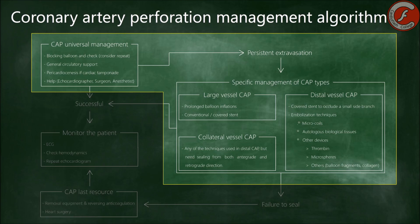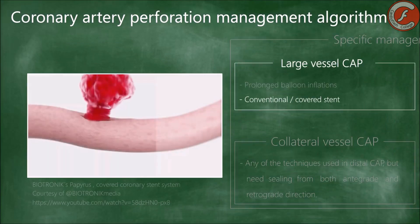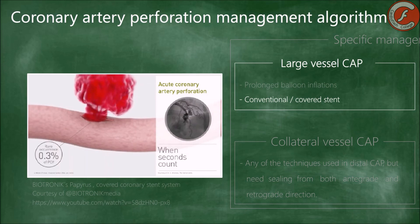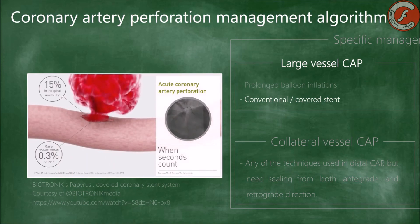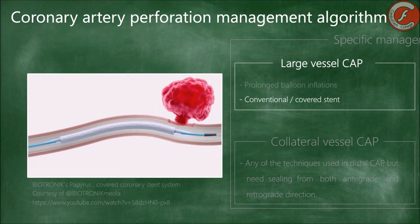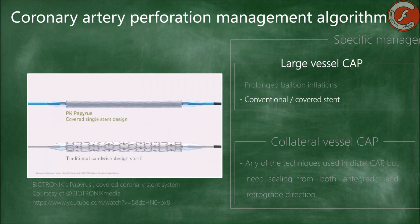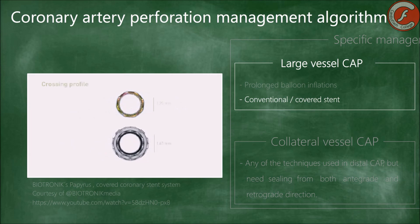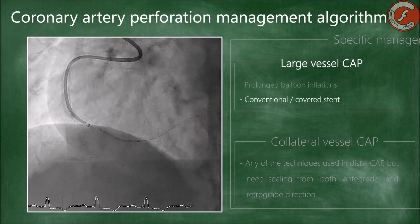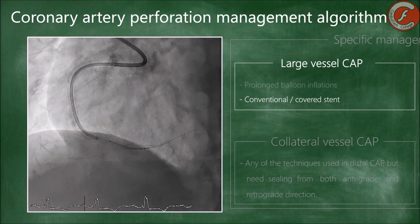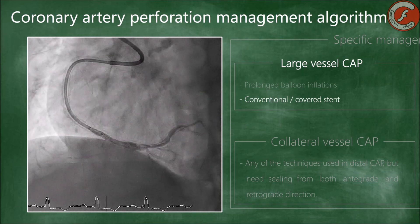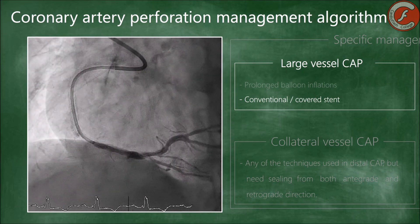Let's start with treatment of large coronary vessel perforations. If bleeding persists despite the blocking balloon, the most recommended therapeutic strategy to seal perforation of large coronary vessels is the implantation of stents covered with polytetrafluoroethylene, polyurethane, or pericardial membrane. Covered stents are specially recommended for vessels with a diameter of 2.5 mm or more and without important nearby collateral branches.